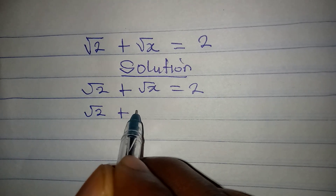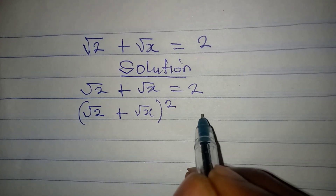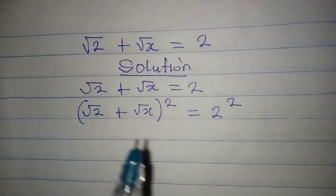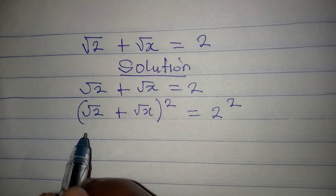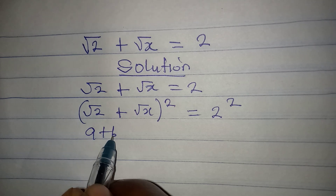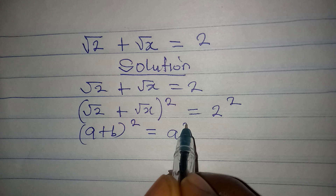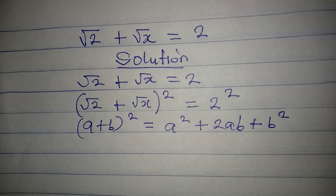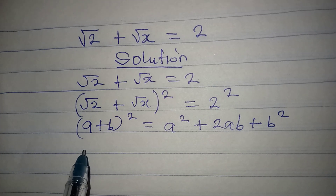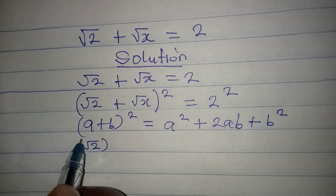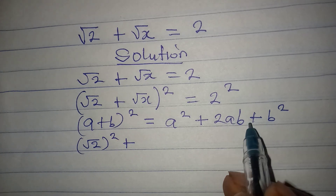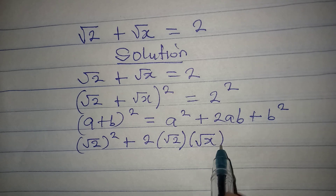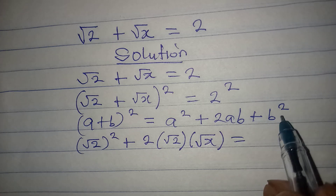We take square root of 2 plus square root of x, put this together and square it, which will be equal to 2 squared. We are squaring this so that we can do away with the square root signs. Following the standard: if you have (a + b)² this gives a² + 2ab + b². Applying this to the left hand side, in place of a² I write root 2 squared, then plus 2ab, which is 2 multiplied by root 2 and root x, and this equals 2 squared.